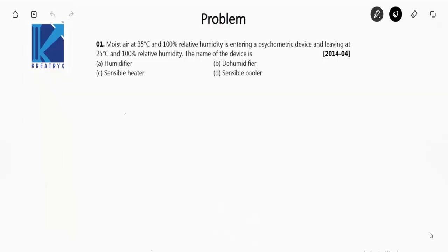Let's solve some previous year GATE problems from the chapter psychrometry. Moist air at 35 degrees Celsius and 100% relative humidity is entering a psychrometric device and leaving at 25 degrees Celsius and 100% relative humidity. This is the initial condition with which the moist air is entering.